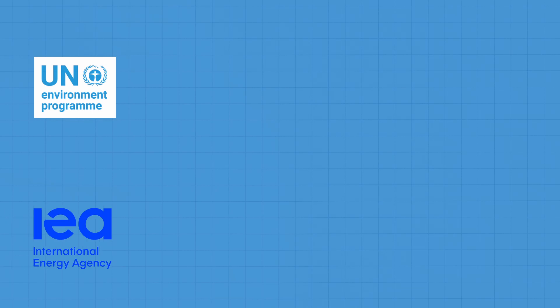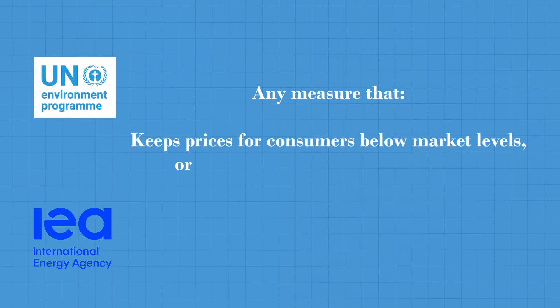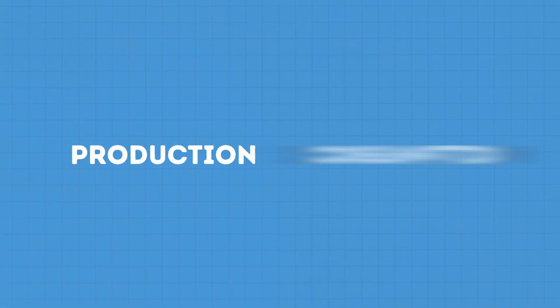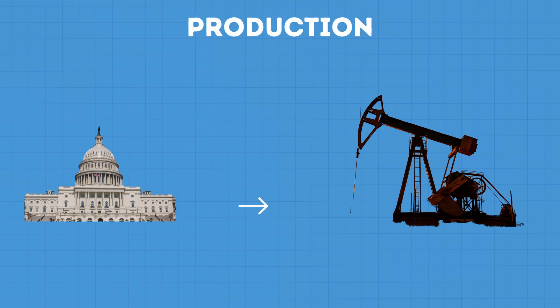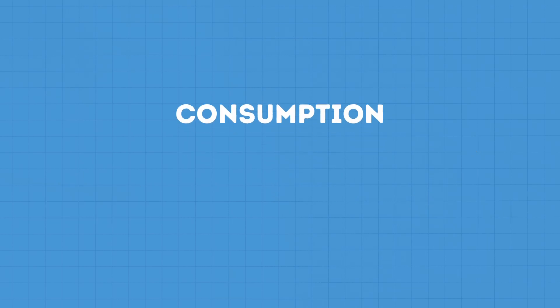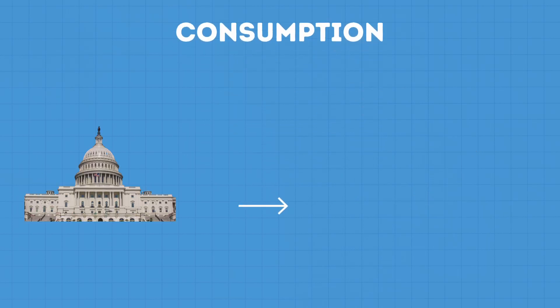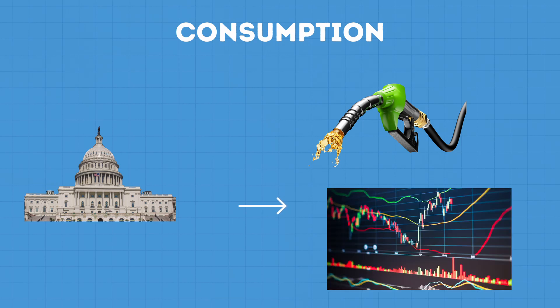The UN and IEA's definition of energy subsidies is any measure that keeps prices for consumers below market levels, or for producers above market levels, or that reduces costs for consumers and producers. So we can classify fossil fuel subsidies into two categories: production subsidies and consumption subsidies. Production subsidies are direct government payments or tax breaks that reduce the cost of producing fossil fuels. Consumption subsidies are when the government funds the difference between what consumers pay and the actual market rate.